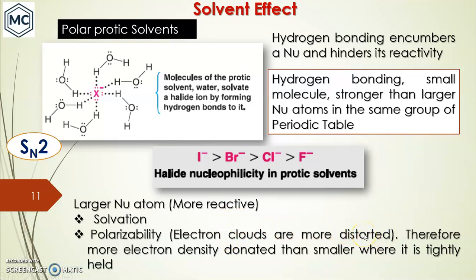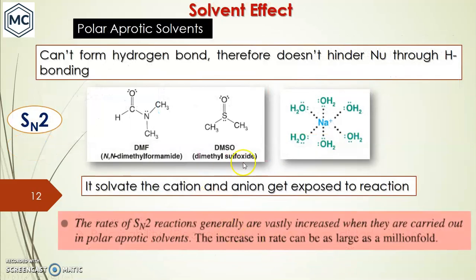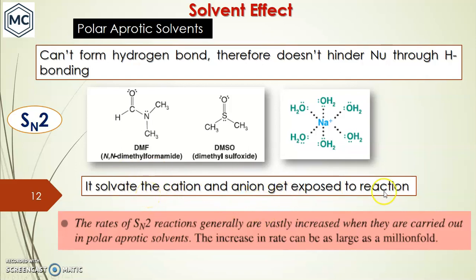Polarizability means the electron cloud can be more easily distorted, allowing more electron density to be donated. In polar aprotic solvents for SN2, hydrogen bonds cannot form with the nucleophile, so the nucleophile is not hindered. Solvents like DMF and DMSO are better solvents for SN2 because they cannot form hydrogen bonds with the nucleophile. At the same time, they can solvate the cation — for example, Na⁺ is solvated, leaving OH⁻ free and more reactive.